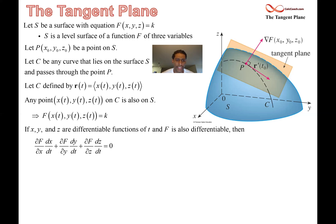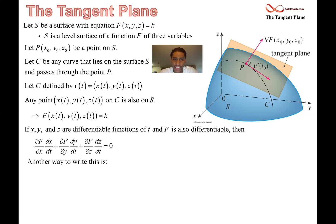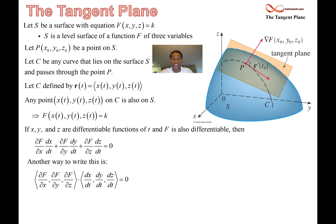Now, look closely at that — it should look familiar. We're going to view it as a dot product. We have the partials multiplied by the associated d/dt terms — dx/dt, dy/dt, dz/dt. So we write it as a vector of partial derivatives, which is the gradient vector, dotted with the vector (dx/dt, dy/dt, dz/dt). And if that dot product equals zero, what does that mean? It means the vectors are orthogonal.